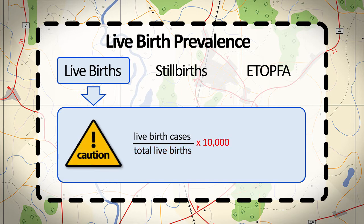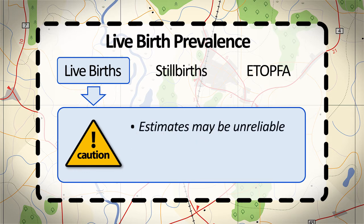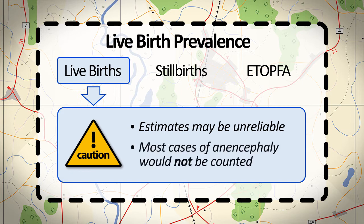Relying on the live birth prevalence alone can lead to estimates that are unreliable, particularly for conditions with a high rate of pregnancy loss before 28 weeks gestation. For example, most cases of anencephaly would not get counted in a program that looks at live births only.